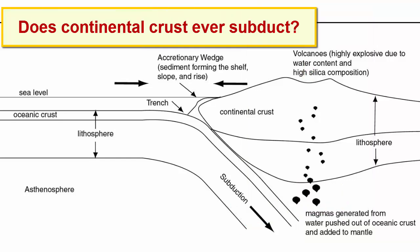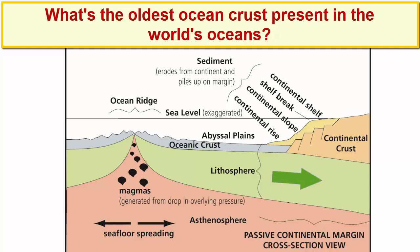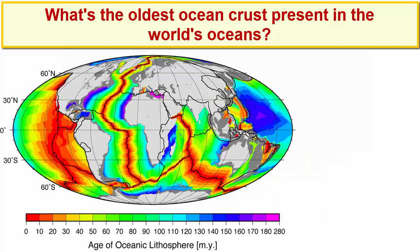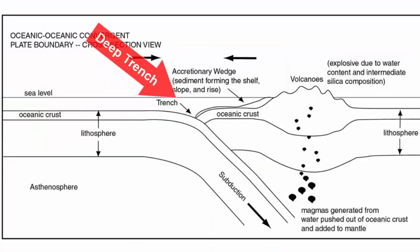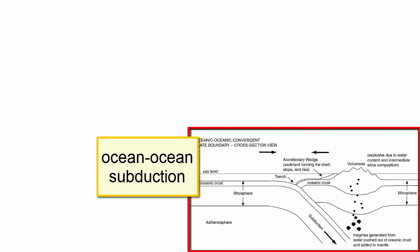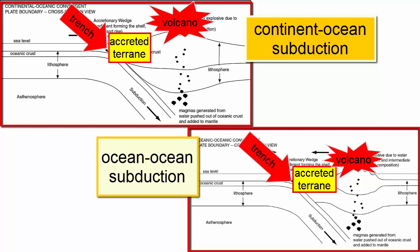Does continental crust ever subduct? No. Why not? It's the least dense material on the planet. How old does ocean lithosphere need to be before it detaches and subducts on its own? All we can find to answer that question is the age of the oldest ocean rock currently residing in the oceans — and that's 200-million-year-old rock subducting under the Marianas Trench in the Pacific. Why is the Marianas Trench the deepest part of the planet? Because it's a converging plate boundary where two ocean plates are colliding, meaning both plates are already riding low isostatically, and with no nearby continents to fill the trench with sediment. Do ocean-ocean subduction zones produce the same features as continental-ocean subduction zones? Trenches, volcanoes, accreted terrain forming coastal mountain ranges — yes. The only difference is that the volcanoes erupt through thinner oceanic lithosphere, making them slightly less dangerous than magmas that rise through thicker continental lithosphere.